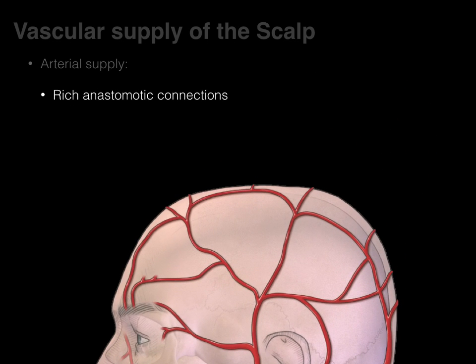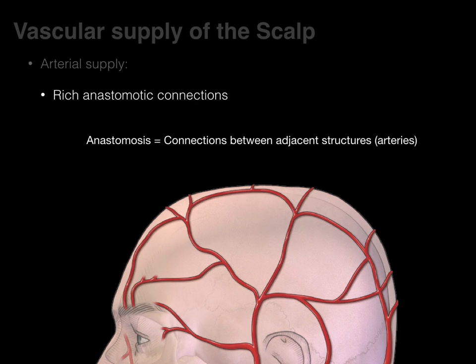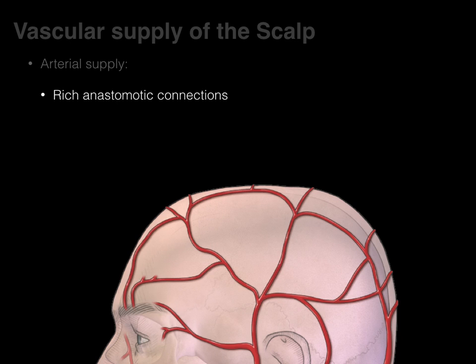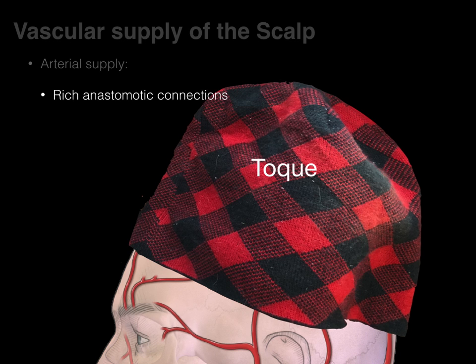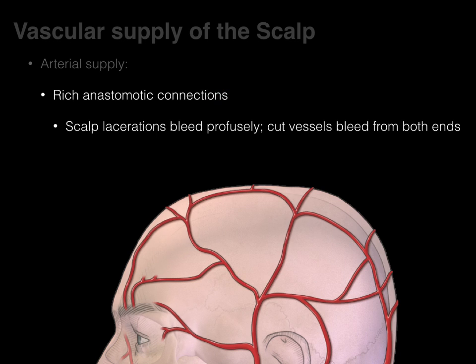There are rich anastomotic connections among all the scalp arteries. Anastomosis means a connection between adjacent structures — in this case, arteries. Because of this rich blood supply to the scalp, it is very easy for the head to give off a lot of heat, which is why it's important to wear a hat in wintertime.